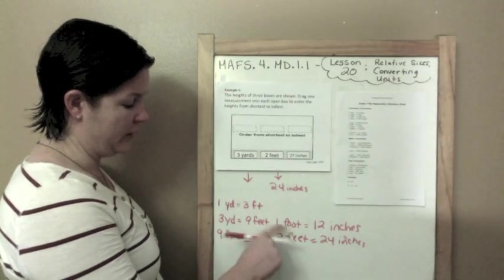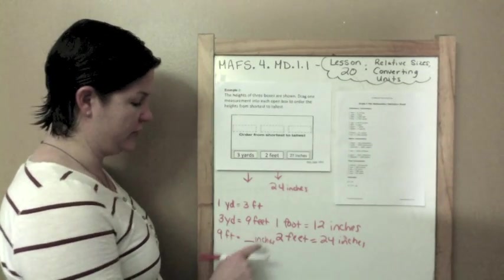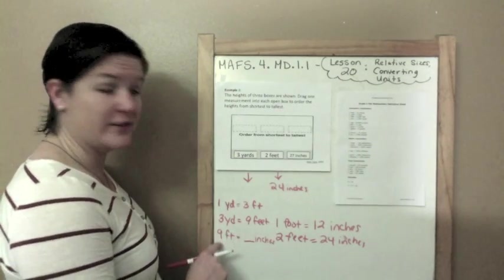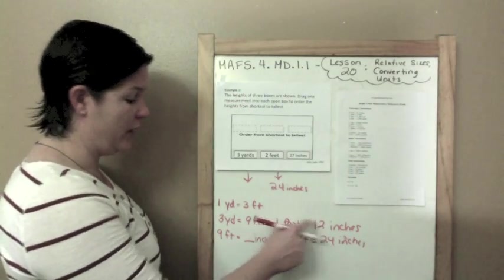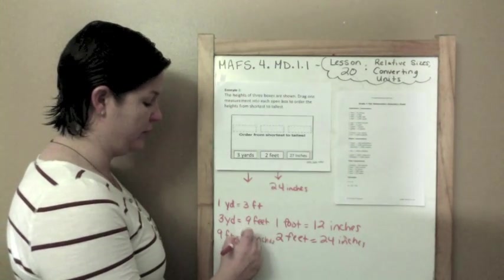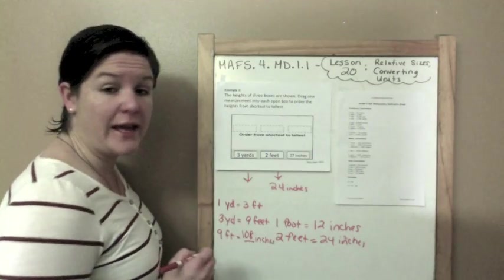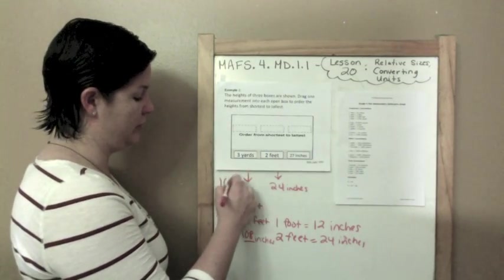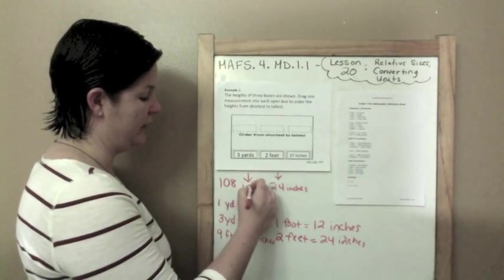Well, we know that 1 foot equals 12 inches. So 1 times 9 equals 9. 12 times 9 would be 108 inches. So 3 yards would be 108 inches.